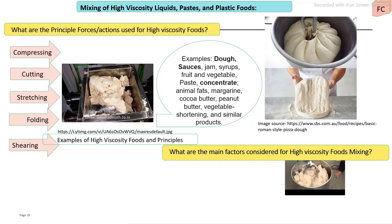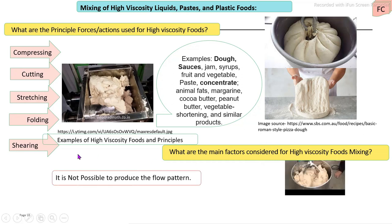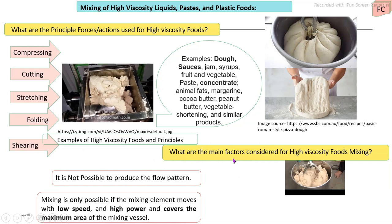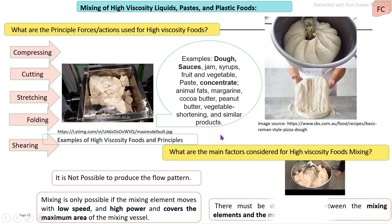During the mixing action, no flow pattern is naturally produced — it must be produced by selecting the proper mixing element and the proper speed of rotation and power. The mixing element must cover the maximum area of the mixing vessel to achieve proper mixing of high viscosity food materials.